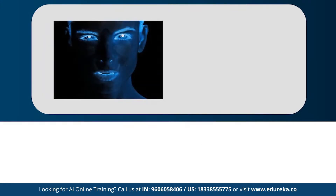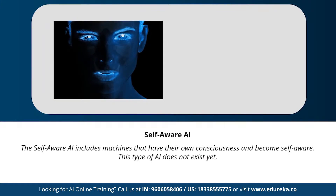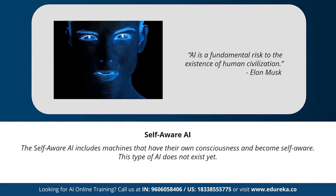The last type of AI is self-aware artificial intelligence. This type involves machines that have their own consciousness and become self-aware. This type of AI is far-fetched, but in the future, achieving a stage of super intelligence might be possible. Geniuses like Elon Musk and Stephen Hawking have constantly warned us about the evolution of AI. Do you ever think we'll reach the stage of artificial super intelligence?